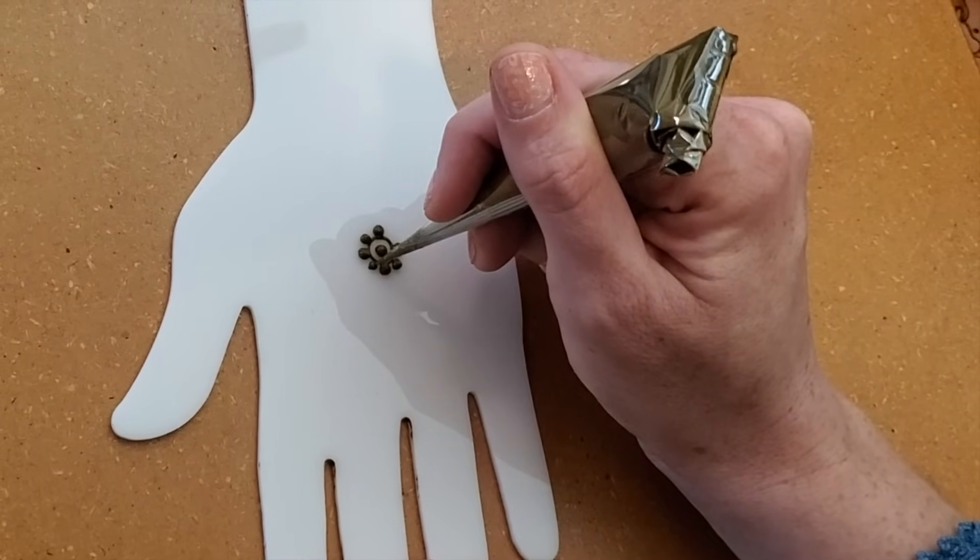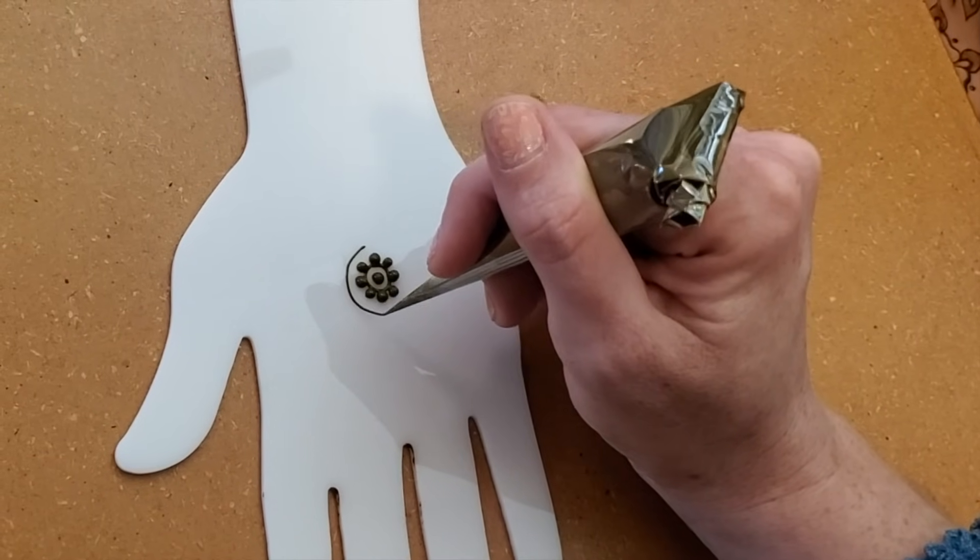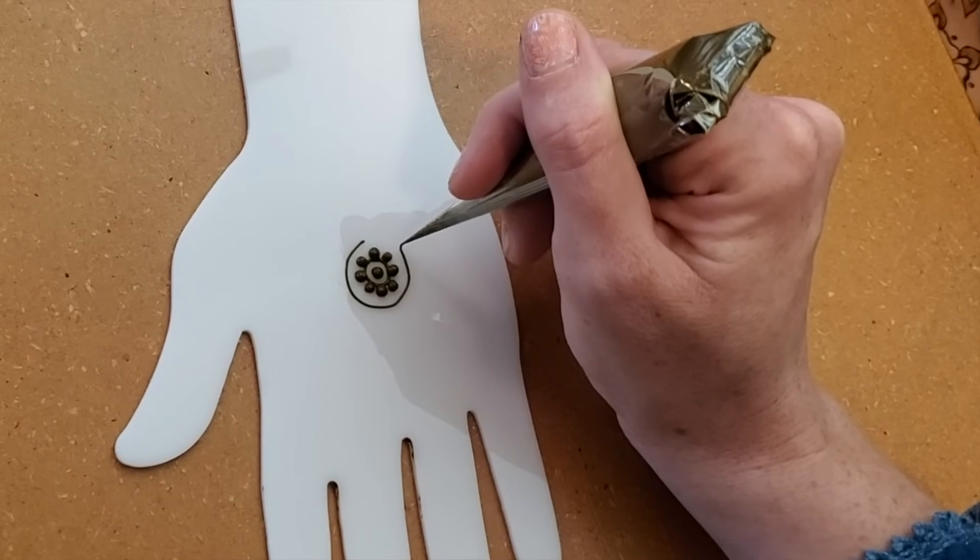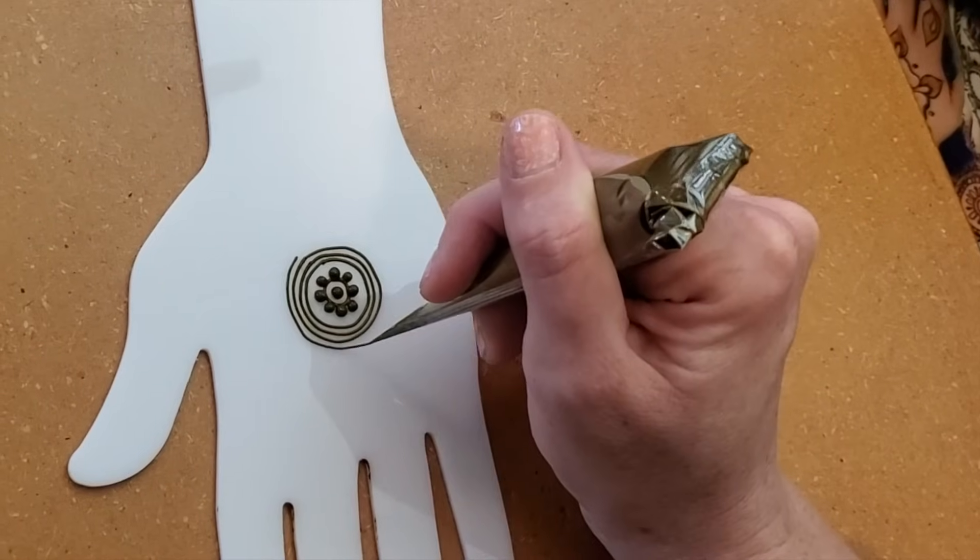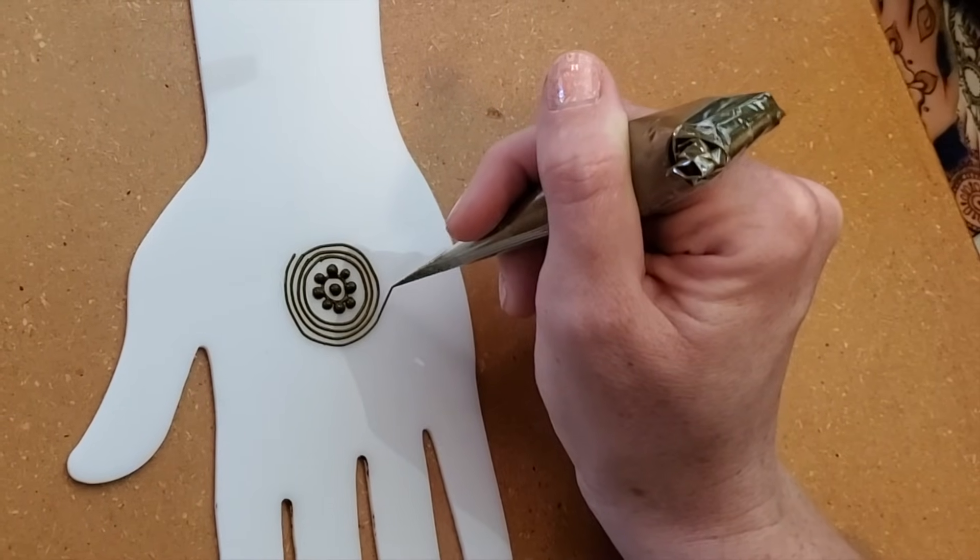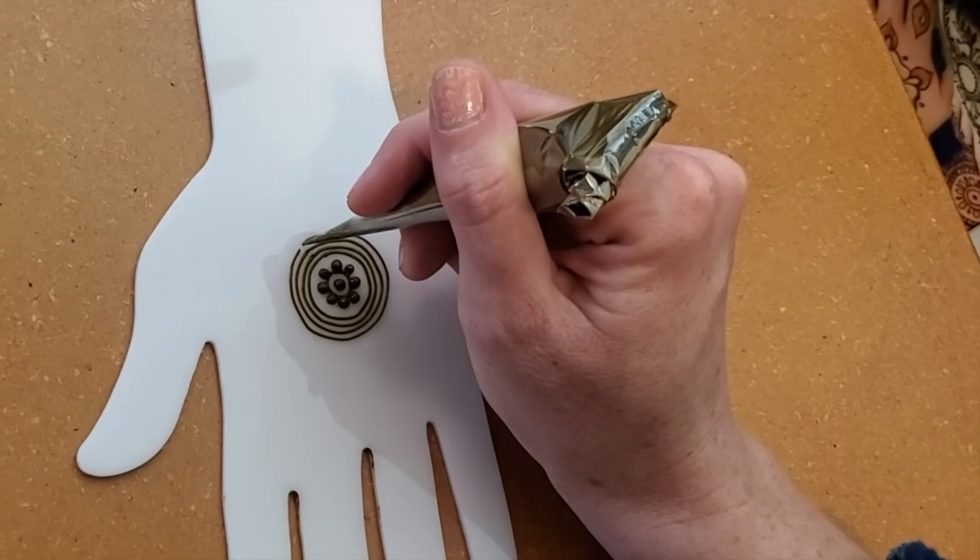I love how much a henna design feels like a choose your own adventure story. One of my favorite things to do is a group of four circles, so this takes some practice and you can see that I'm holding my cone just a little bit above the surface and I'm letting the henna fall.